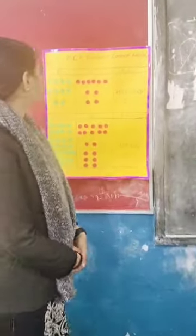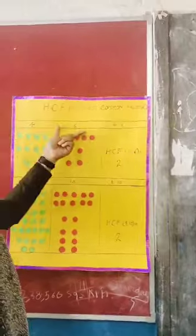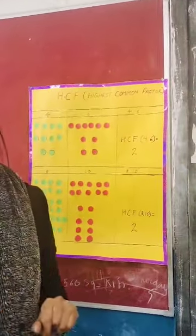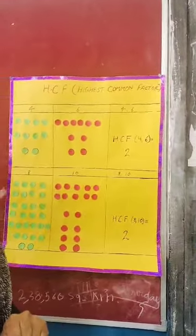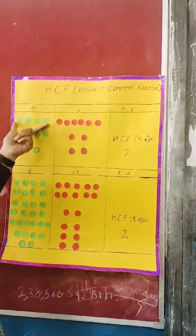For example, here we took 2 numbers 4 and 6. To represent number 4, here we take 4 small circles.